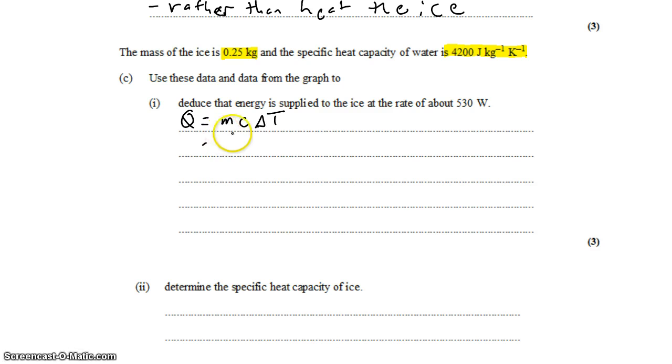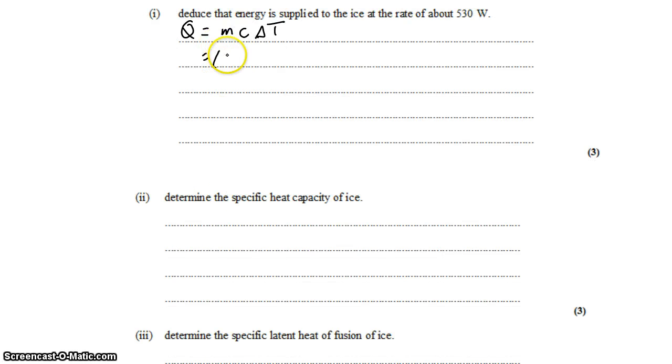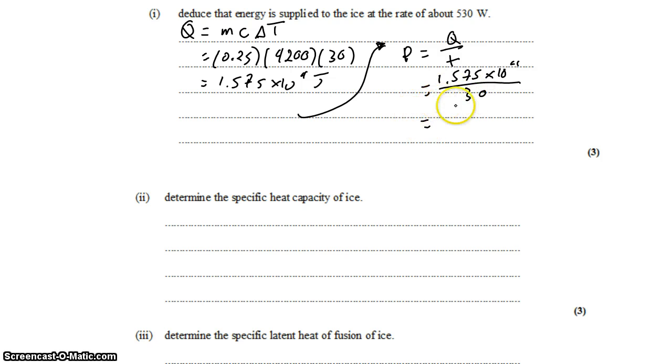Coming back over here, we find that the energy necessary to add to the water to change its temperature by 15 degrees is its mass times the specific heat capacity times the change in temperature. That gives us 1.575 times 10 to the fourth joules. But at the same time, we know that this total change in energy takes 30 seconds to complete. So the power, which is the energy supplied over the time taken, is 1.575 times 10 to the fourth joules in 30 seconds. And that gives us 525 watts or about 530 watts.